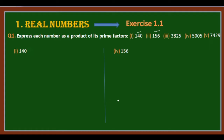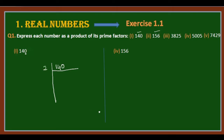For example, the first question is 140. According to the fundamental theorem of arithmetic, we start with the smallest prime number.